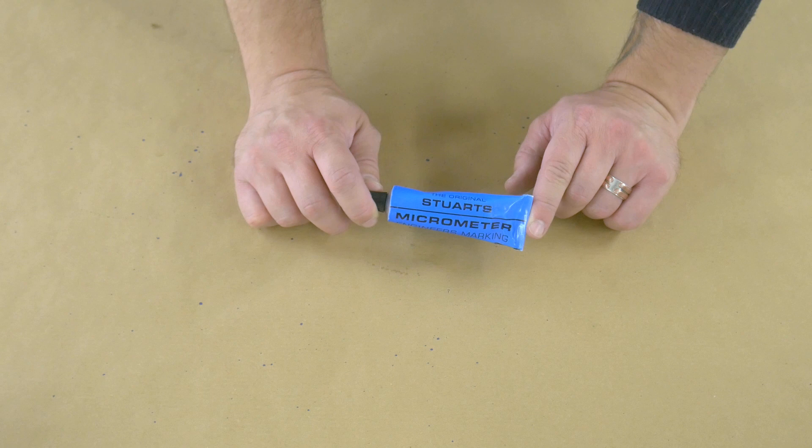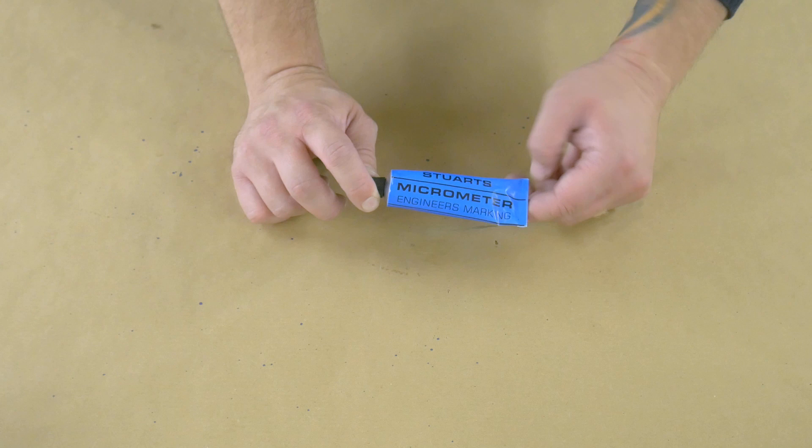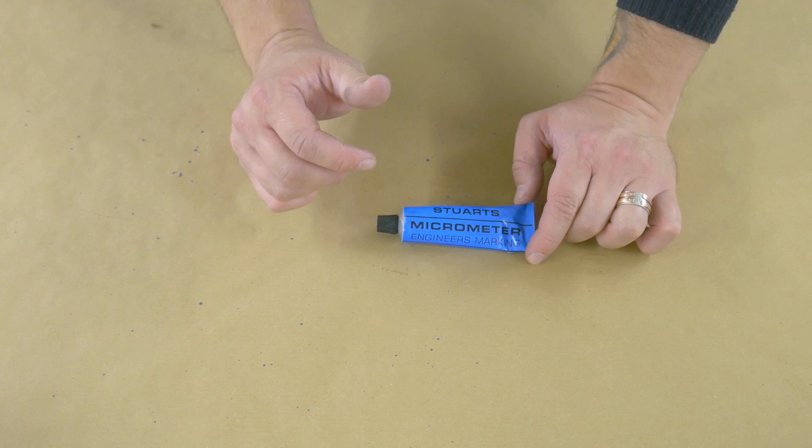The tubes are a bit more expensive, might even be twice the price. They are twice as good. The contents don't separate, they don't leak, crucially, making a mess of your toolbox or your shelf.